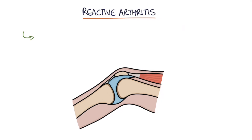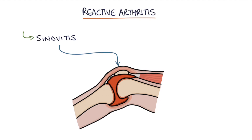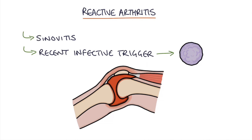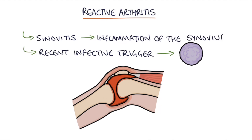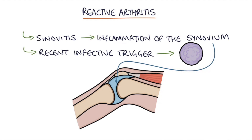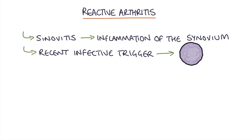Reactive arthritis is where synovitis occurs in joints as a reaction to a recent infective trigger. Synovitis is inflammation of the synovium, which is inside the joints and acts like a cushion to keep the joints from wearing out.